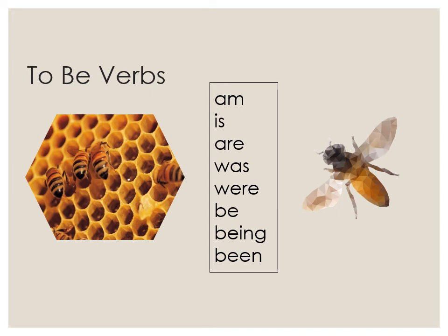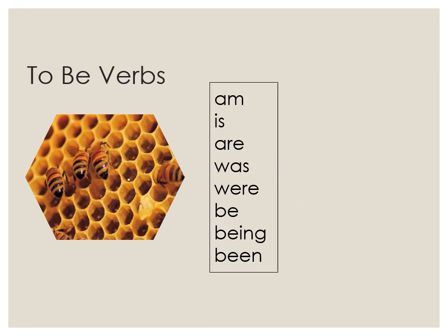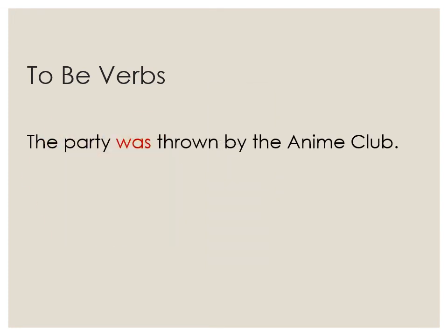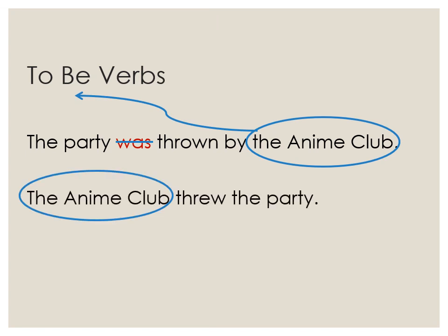The final PEST to look for in your writing are the to be verbs: am, is, are, was, were, be, being, and been. Since those words tend to make sentences wordy, limit the to be verbs in your writing as much as possible. Getting rid of to be verbs involves rearranging sentence structure. Try using subjects that do something rather than have something done to them. To edit the sentence "the party was thrown by the anime club," switch the end of the sentence with the beginning. The party is the thing receiving the action; the anime club are the agents — the ones doing the action. Rearranging the sentence puts the agents at the beginning: "The anime club threw the party" is a more active way of writing the sentence, and it's less wordy.